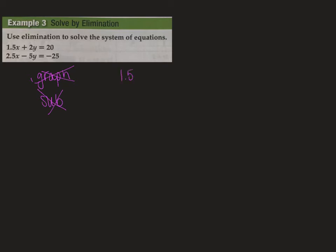So I have 1.5x plus 2y equals 20. And then I also have 2.5x minus 5y equals negative 25. So generally, I like to write my system. And then we're going to have a new system. And that's going to be after we multiply by whatever values we figure out we need to multiply by.